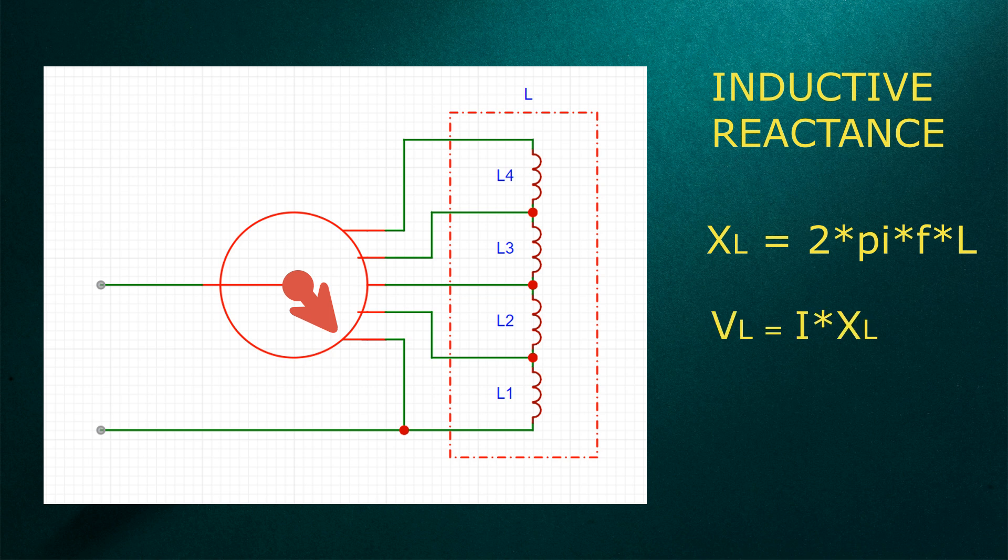Here voltage drop would be current multiplied by the inductive reactance value. So you can understand that it works just like resistive regulators. The speed goes down as the inductance value goes up.